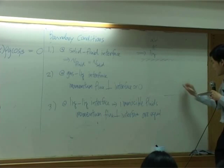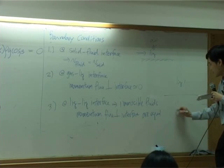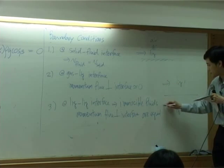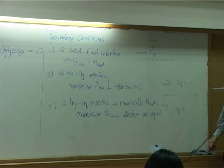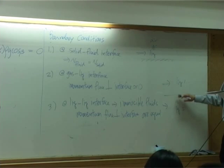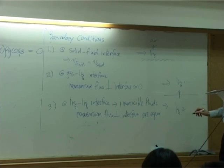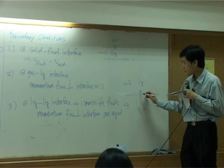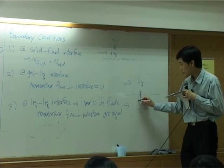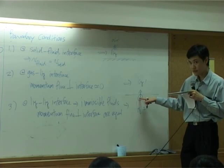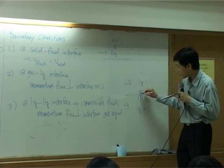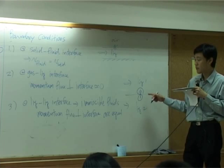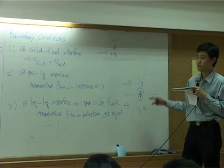That means when you have liquid one, you have liquid two flowing, let's say flowing in this direction. Liquid two can transfer momentum across these boundaries to liquid one. So therefore, momentum flux calculated based on this side is supposed to be equal to momentum flux calculated based on that side. They are continuous in terms of momentum transfer.